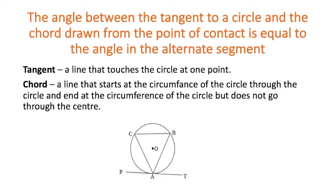We're going to start with the definition of a tangent. Looking at our diagram, the tangent is the line that touches the particular shape — in this case a circle — at one point. So the tangent here is P-A-T, and you can see that it touches the circle at A. A chord is a line that touches the circle circumference in two places. In this diagram we actually have three chords: chord A-B, chord B-C, and chord C-A.